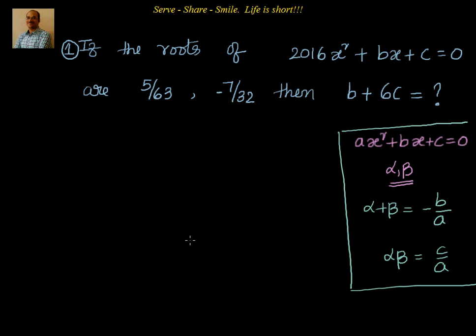So let's go ahead and do that. Now, what is a here? a is 2016, b = b and c = c. What is α? α is 5/63. What is β? β is -7/32.